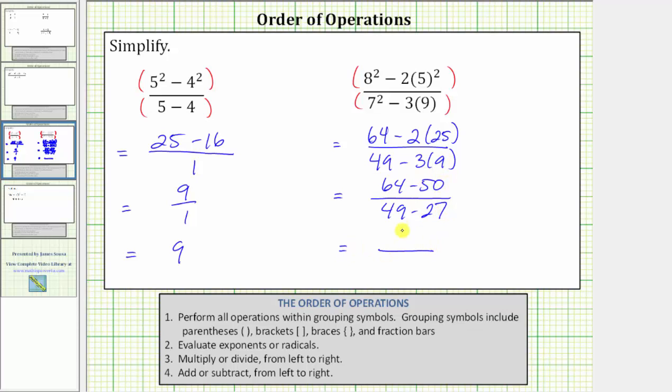64 minus 50 equals 14. 49 minus 27 equals 22.